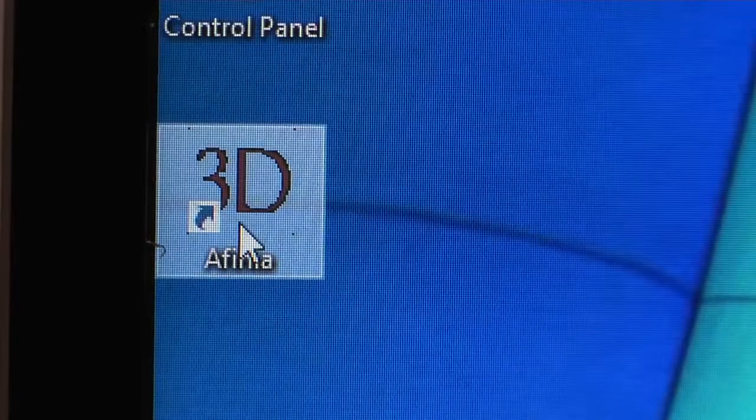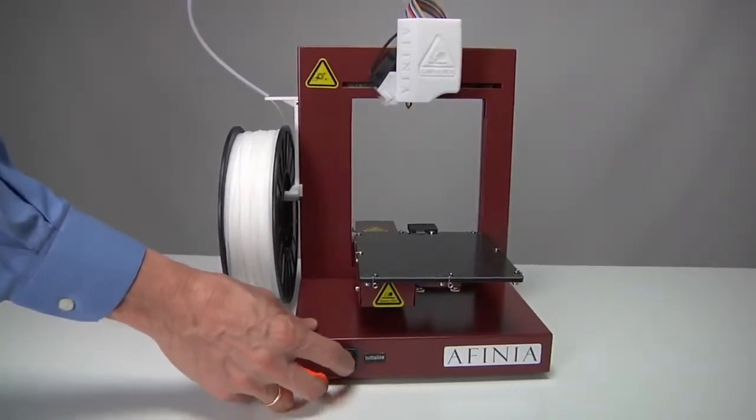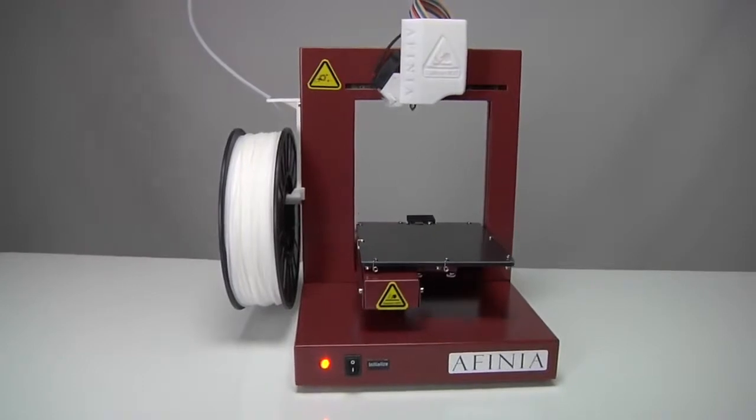Loading the filament. Start the Affinia 3D software and push the initialize button on the front of the 3D printer. When the printer is on, the light will turn green.